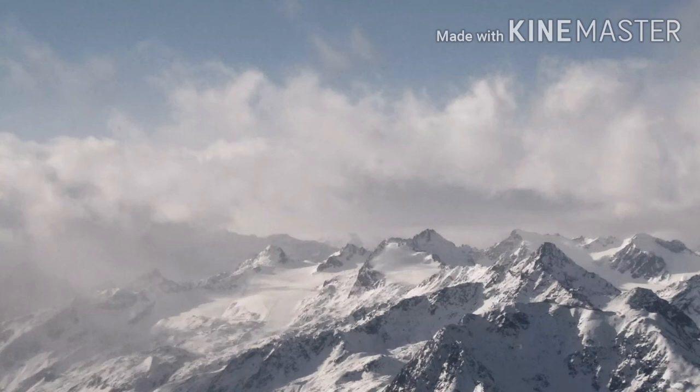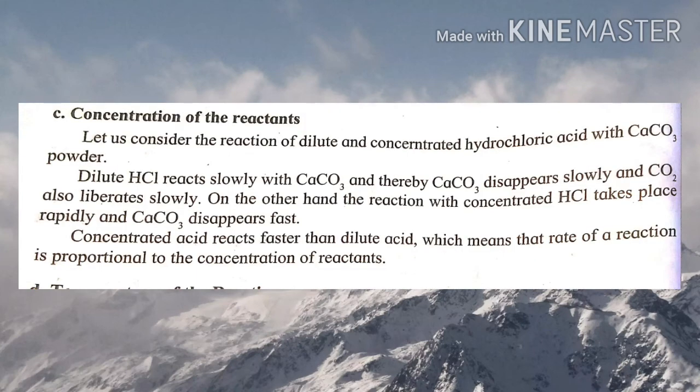Number three is concentration of the reactants. Dilute HCl reacts slowly with CaCO₃ and CO₂ also liberates slowly. On the other hand, concentrated HCl reacts rapidly with CaCO₃. It means that the rate of reaction is directly proportional to the concentration of the reactant.